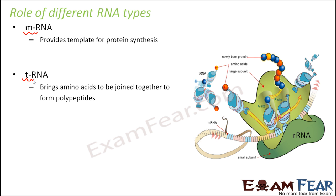So mRNA will carry the message from DNA — that is the genetic information — and it will decide what the sequence of the amino acids will be. But tRNA will bring or carry the amino acids so that they can be joined together to form the polypeptides.